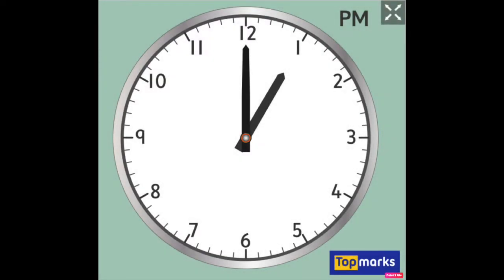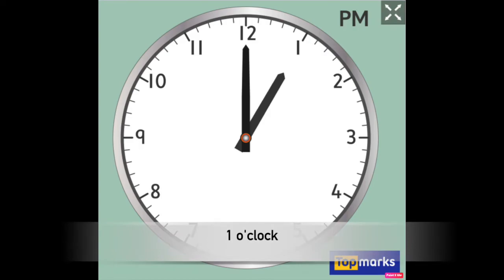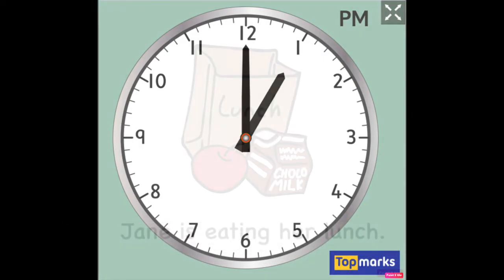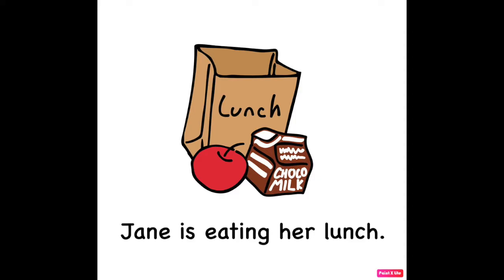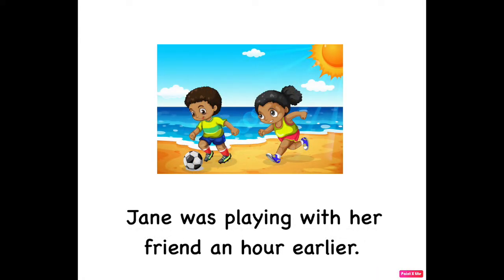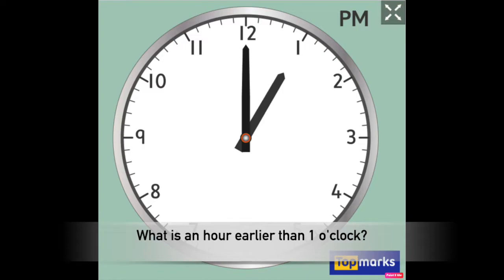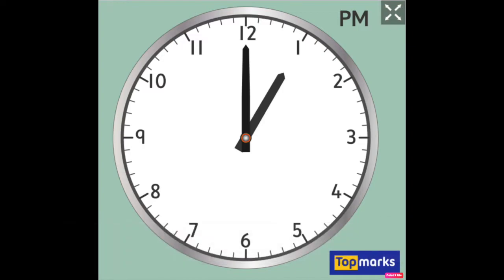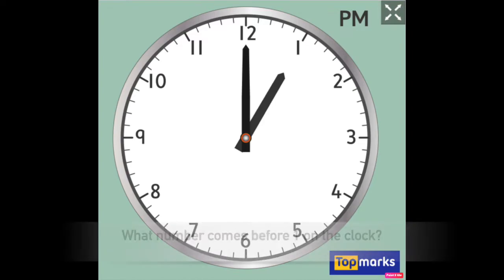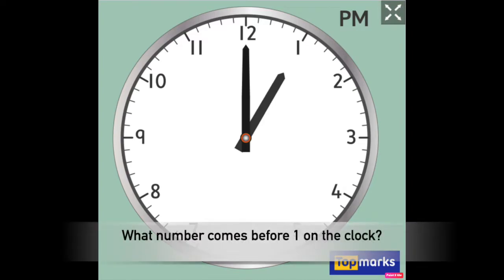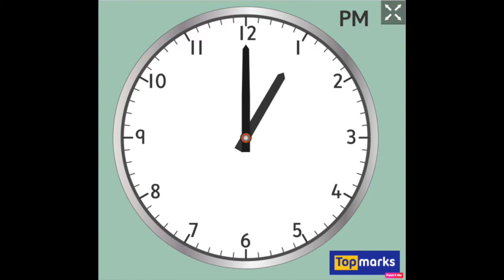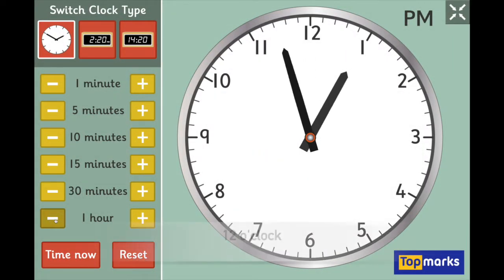Now for a tricky one. What time is it here? One o'clock. Jane is eating her lunch, but an hour earlier in the day she was playing with her friend Mark. What time was she playing with her friend Mark? What is an hour earlier than one o'clock? Here is the tricky part — what number comes before one on the clock? The answer is twelve o'clock.